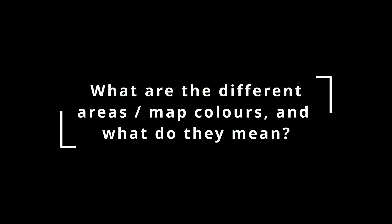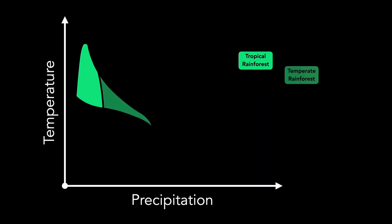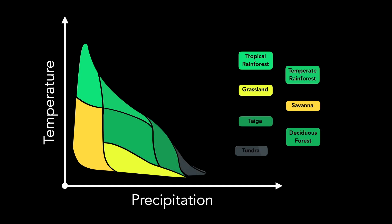What are the different areas slash map colors, and what do they mean? These represent different biomes and they correlate with the Whitaker biome system. They're essentially just a representation of temperature, water, and potential for life on a given tile. For context, this is the key for different colors.